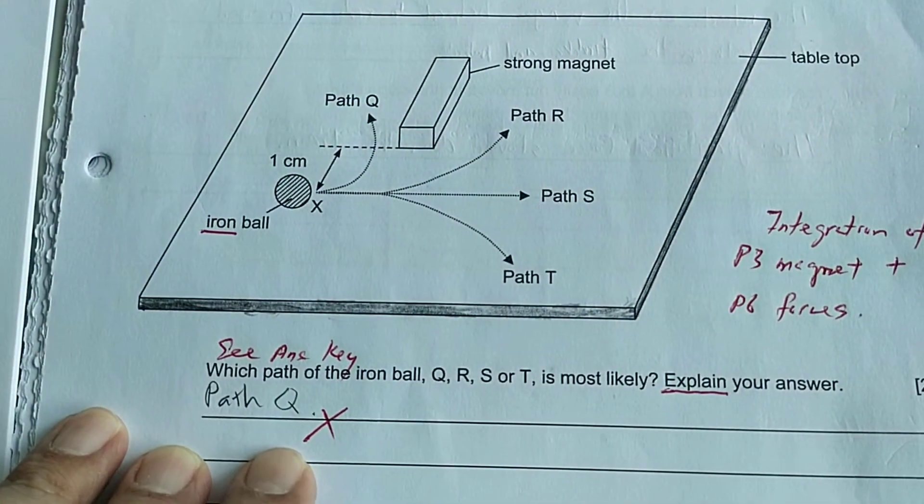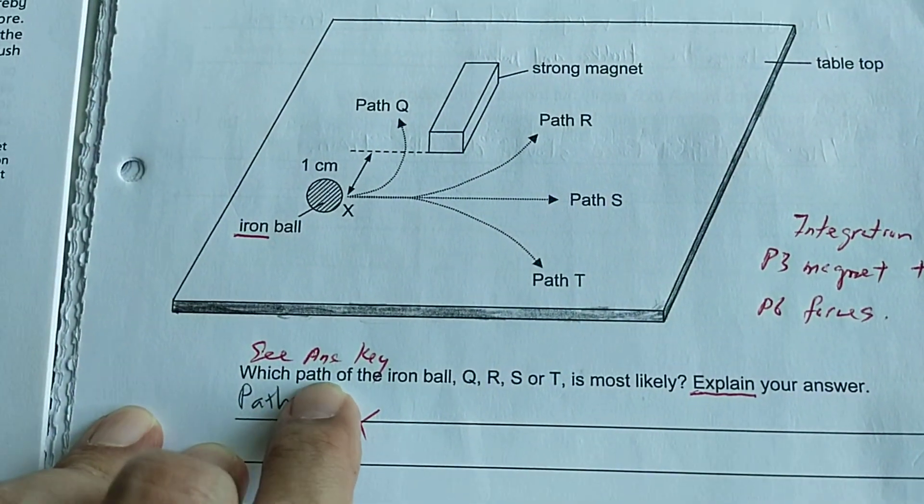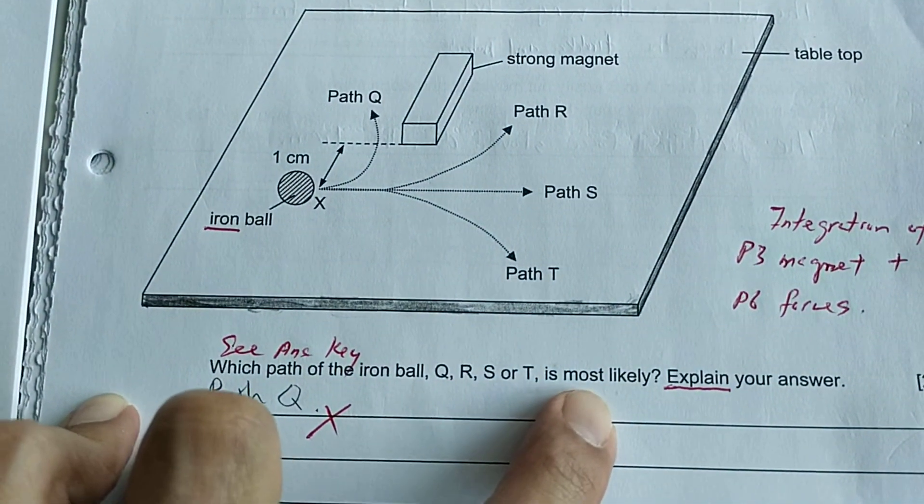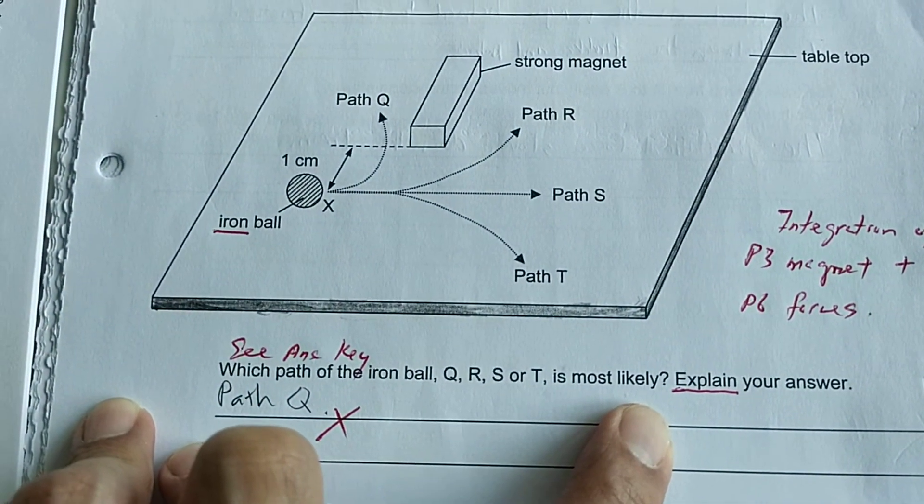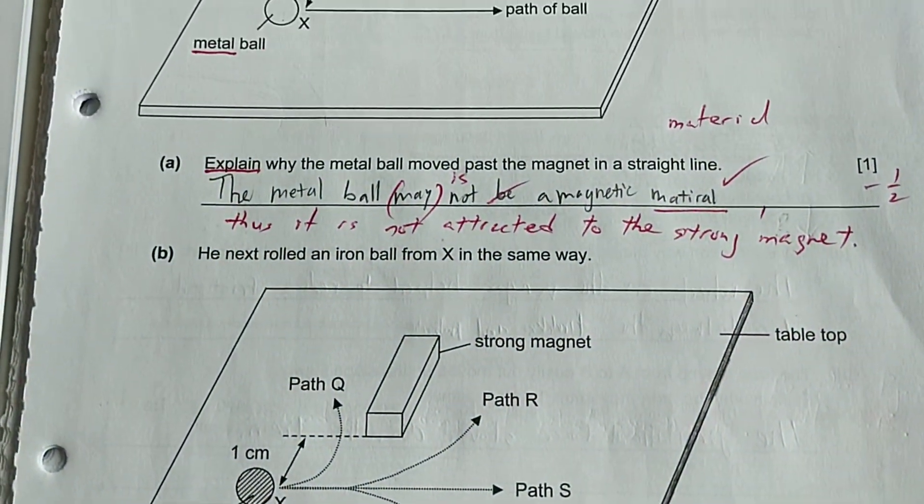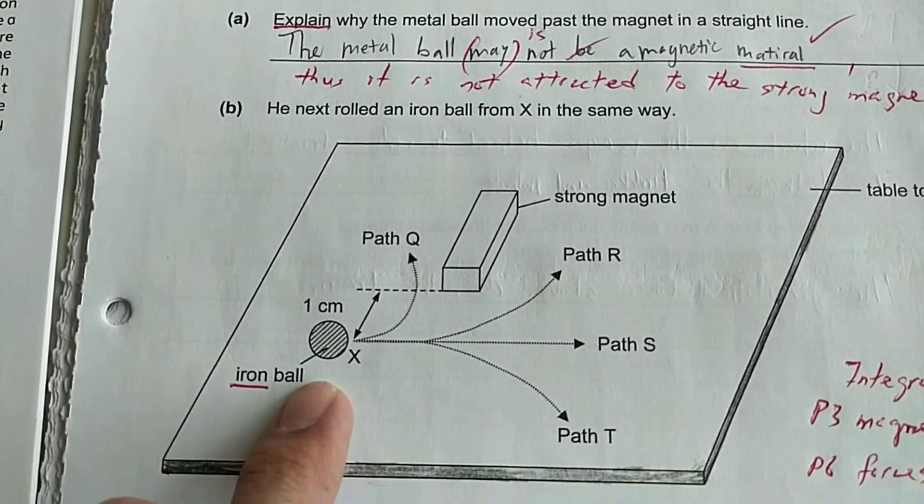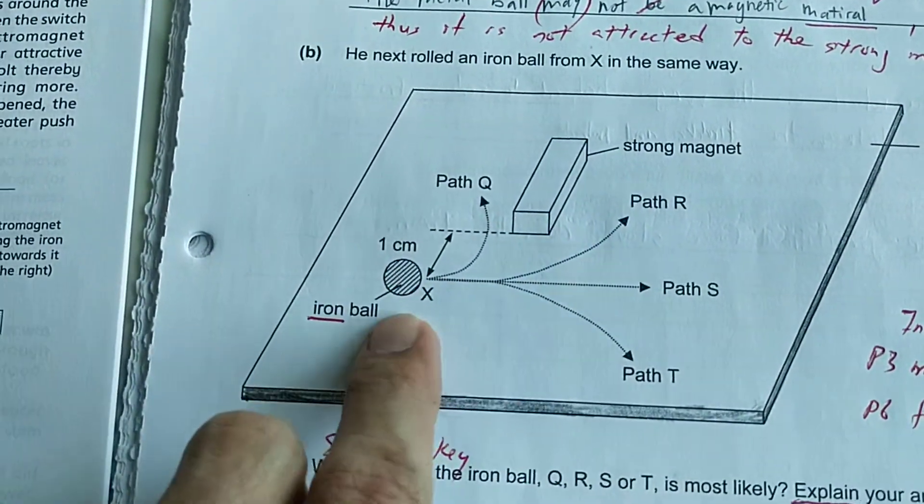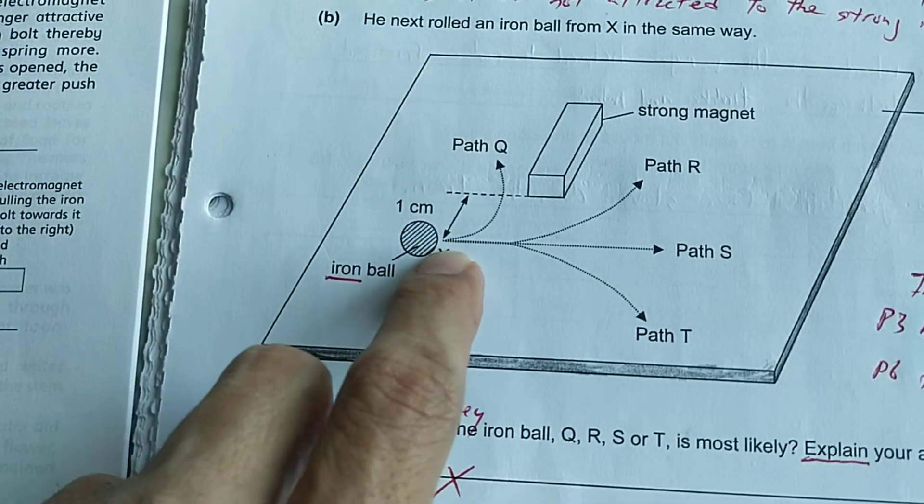He rolled an iron ball from X in the same way, the same amount of force. And now the student needs to give this answer: which path of the iron ball Q, R, S or T is most likely? So immediately the student got to think because iron is magnetic, so it must be able to be attracted by the strong magnet.